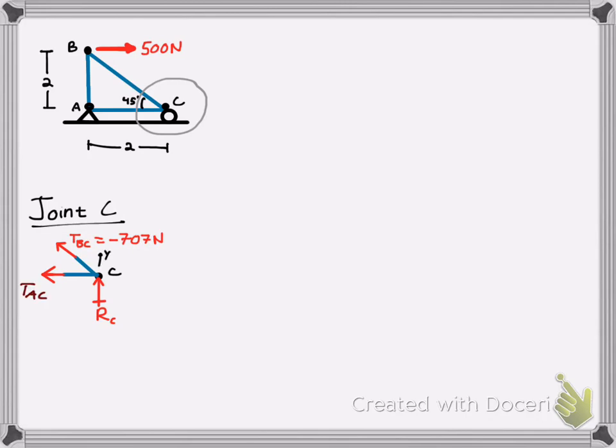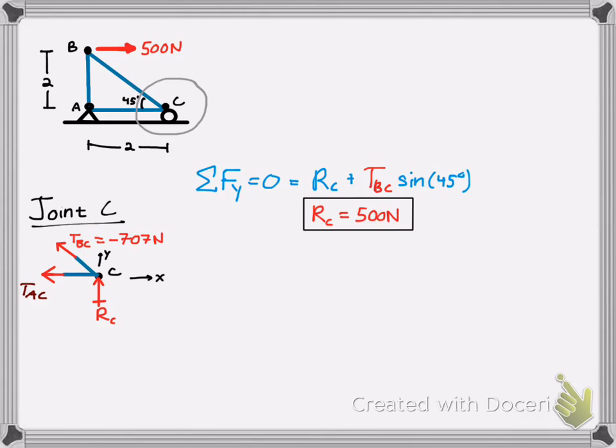We're going to find our coordinate system and sum forces. By summing the force in the vertical direction, we know that RC is in the positive direction, but we also got to subtract the y component of TBC. Sign 45. And then you get the reaction force is, in fact, 500 newtons in the upward direction.